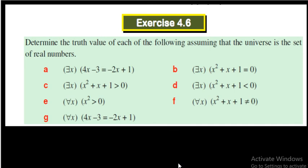Here is an exercise. Determine the truth values of each of the following, assuming the universe is the set of real numbers. Part (a): there exists x such that 4x − 3 = −2x + 1. We need to solve and find the value of x. If we can find a real number x, we can say it is true.